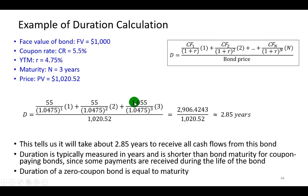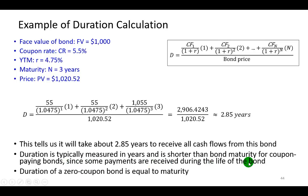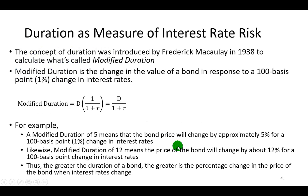That includes the principal, which you can see here in the third and final year, included in the cash flow. Duration is typically measured in years and is shorter than bond maturity for coupon-paying bonds, because some of the payments are received in the interim of the bond's life. For zero coupon bonds, though, duration is exactly equal to the maturity of the bond.